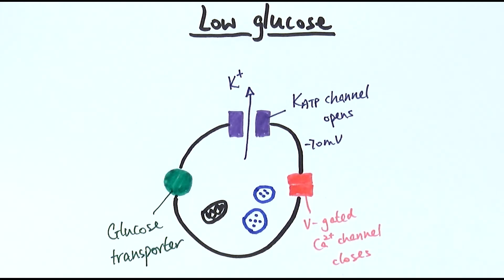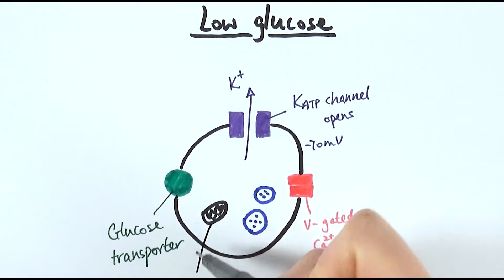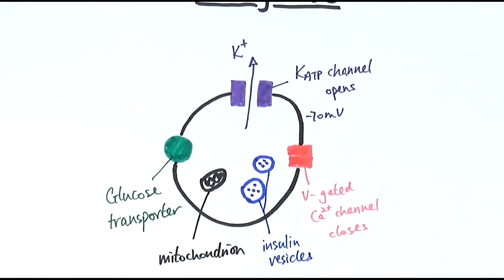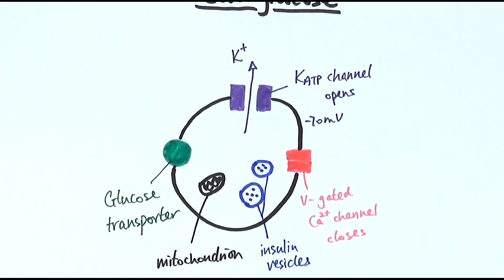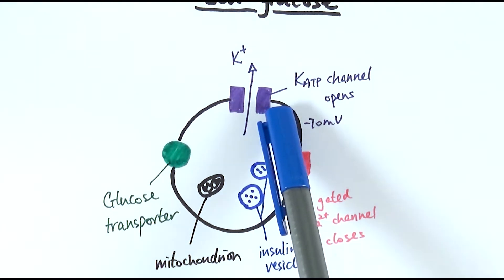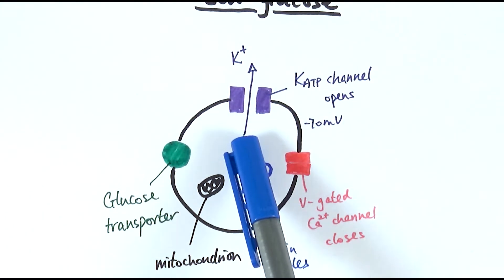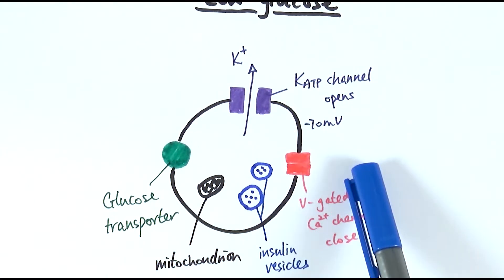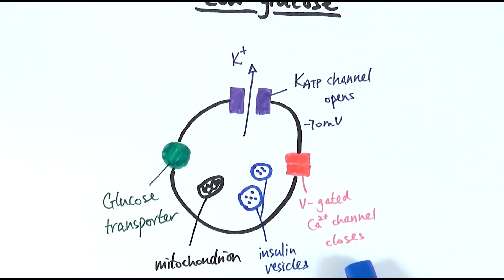We also have a mitochondrion — obviously inside the cell there will be more than one. And here we have insulin vesicles, also called secretory vesicles, which contain insulin. During the resting state, when there is not a lot of glucose in the bloodstream, the ATP-sensitive potassium ion channels remain open, allowing potassium ions to diffuse out and maintaining the membrane at a resting potential of minus 70 millivolts. The voltage-gated calcium ion channels are closed during that time.